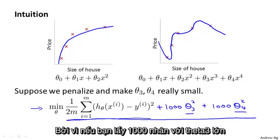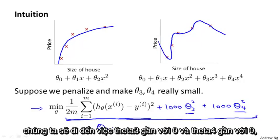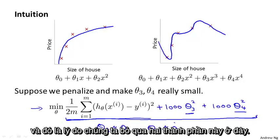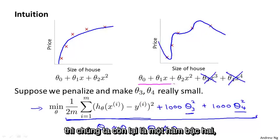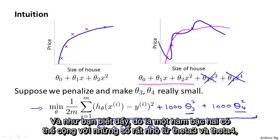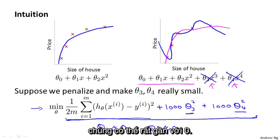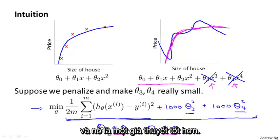Because otherwise, if you have 1,000 times theta 3, this new cost function is going to be big. So when we minimize this new function, we're going to end up with theta 3 close to 0 and theta 4 close to 0. And that's as if we're getting rid of these two terms over there. And if we do that, then if theta 3 and theta 4 are close to 0, then we're basically left with a quadratic function. And so we'll end up with a fit to the data that's a quadratic function plus maybe tiny contributions from small terms, theta 3, theta 4, that may be very close to 0.